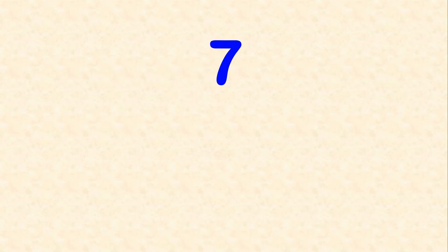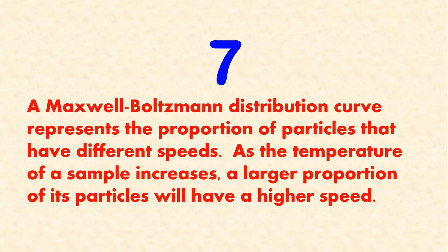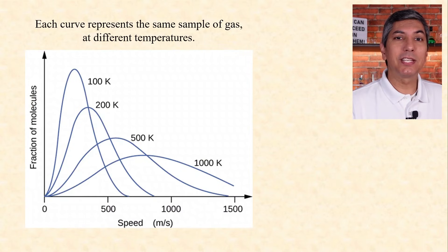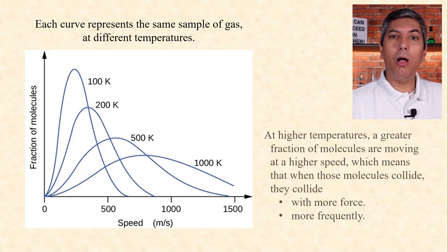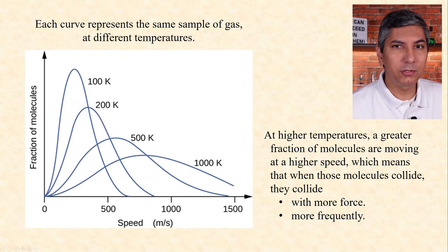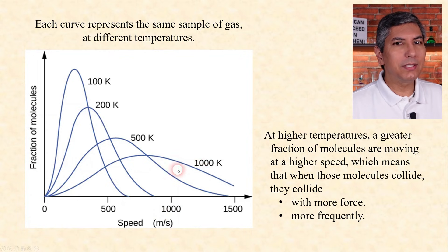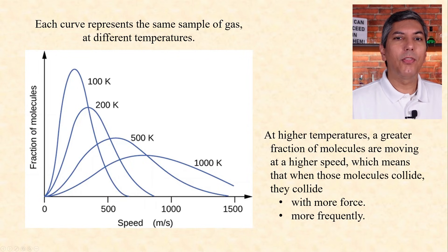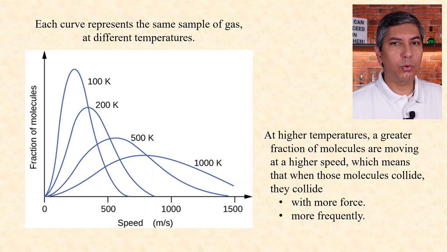Number seven: the Maxwell-Boltzmann distribution curve represents the proportion of particles that have different speeds. As the temperature of a sample increases, a larger proportion of its particles will have a higher speed. This distribution shows four curves — each representing the same gas sample at different temperatures. At all temperatures, whether 100 K or 1000 K, there are always some molecules moving very slowly. At higher temperatures, a greater fraction of molecules move faster and collide with more force, which is why raising the temperature is so effective at increasing the rate of a reaction.